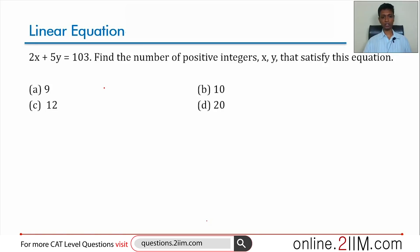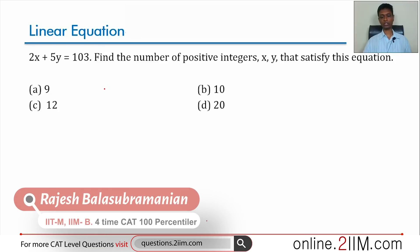2x plus 5y equals 103. Find the number of positive integers x and y that satisfy this equation. I am looking for positive integers, a very important idea. 2x plus 5y is 103.